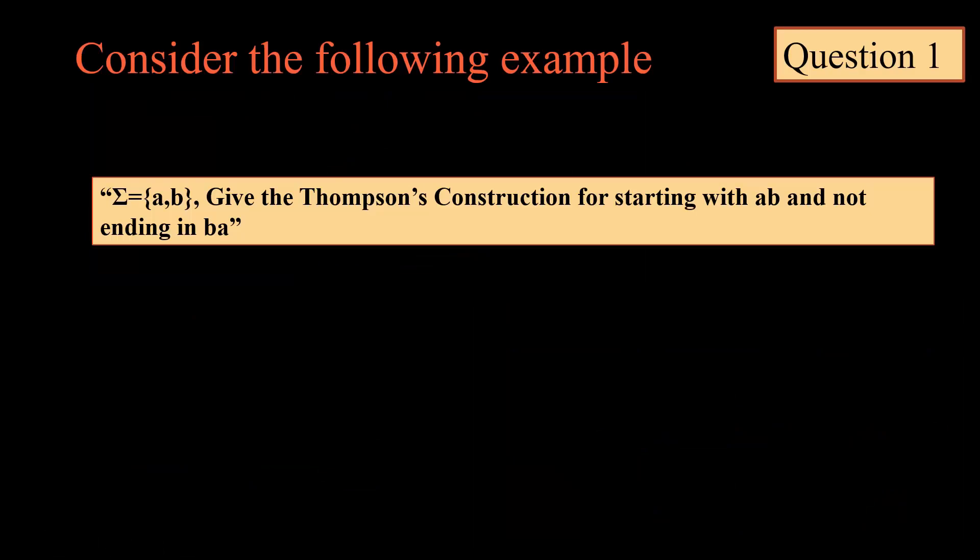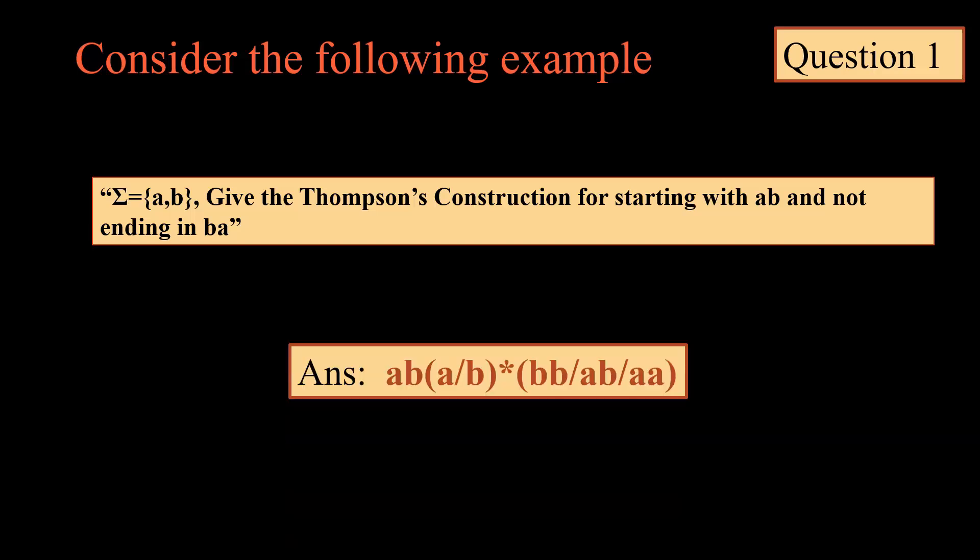Now if we talk about the Thompson's construction for all strings starting with ab and not ending with ba, it is compulsory that it should start with ab and it should not end with ba. So all the combinations except ba will be considered, that is bb, ab, or aa.